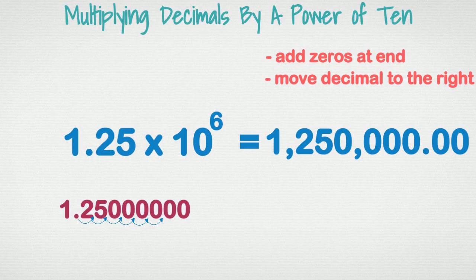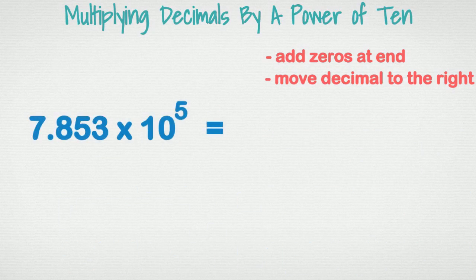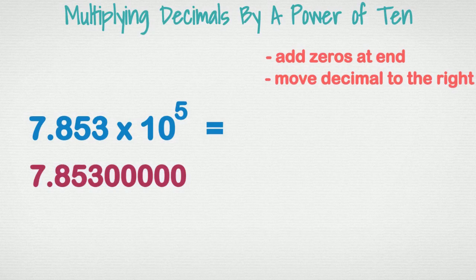How about 7.853 times ten to the fifth? We write our original number down, add some zeros, and move the decimal five places to the right. The answer is seven hundred eighty-five thousand three hundred.